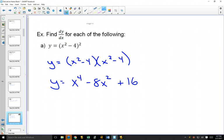So by expanding that, I change it into the form where it is adding and subtracting a bunch of power rules. And now I can find my derivative by taking the derivative of each one. So this will be 4x cubed minus 16x plus 0, and we have our derivative.